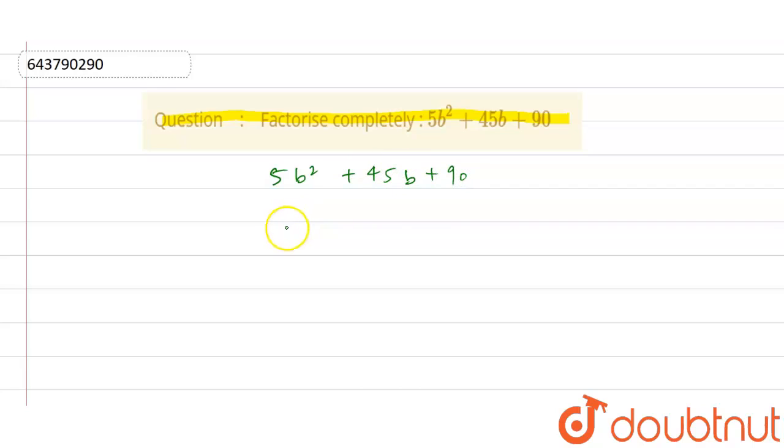Now we will divide this equation by 5, we get b² + 9b + 18.